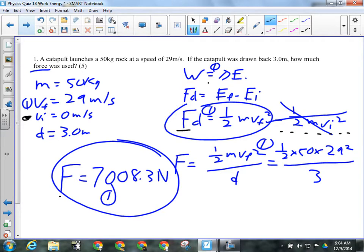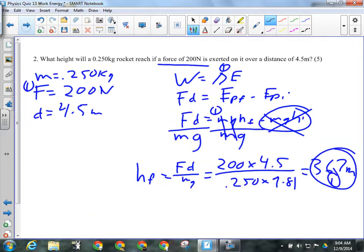Questions on that one? Number two, mark for givens. The mass of the rocket was 0.250 kilograms. The force used was 200 newtons. The distance over which it was exerted was 4.5 meters. So work is a change in energy, work energy theorem, so give them a mark if they have something along the lines of these two things here.